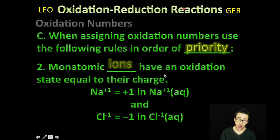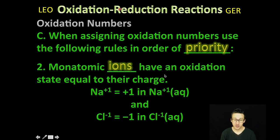Rule numero dos. Monatomic ions have an oxidation state equal to their charge. So, if you have a sodium ion in solution, its oxidation number is going to be plus one. It has already lost one electron. Chloride ions are going to have an oxidation number of negative one. It has gained one electron.